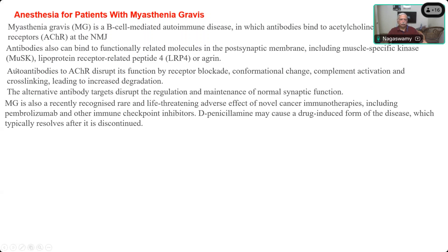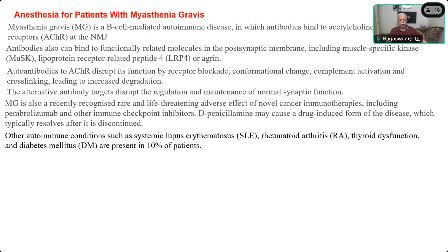The disruption of voltage-gated channel function can be a life-threatening condition. Novel cancer immunotherapy can also produce conditions mimicking myasthenia gravis. D-penicillamine, a drug given for copper resistance disease, can also produce a picture similar to myasthenia gravis. If it is because of an autoimmune problem, it may be associated with other autoimmune diseases like SLE, rheumatoid arthritis, thyroid dysfunction, and diabetes mellitus.